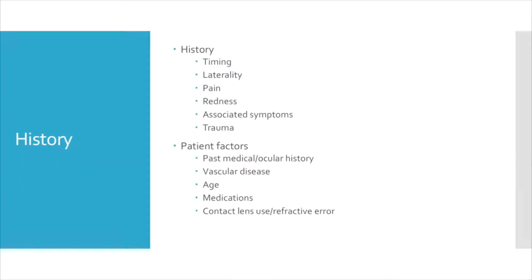Many aspects of the history can help in the evaluation of acute vision loss. First, timing: was the vision loss truly acute? Was it over seconds, minutes, hours, or was it noticed first upon awakening? This is all key information to gather.